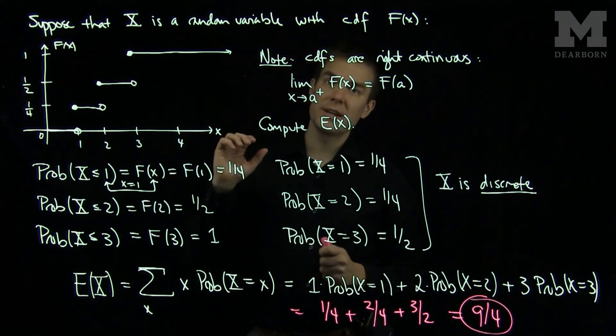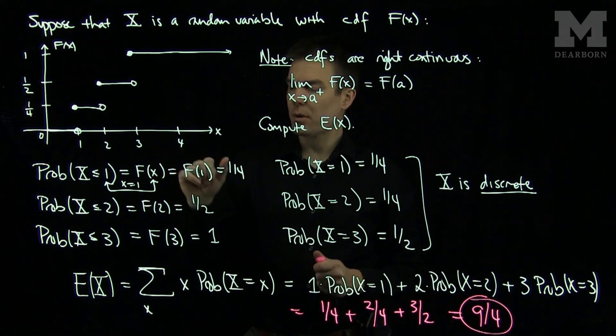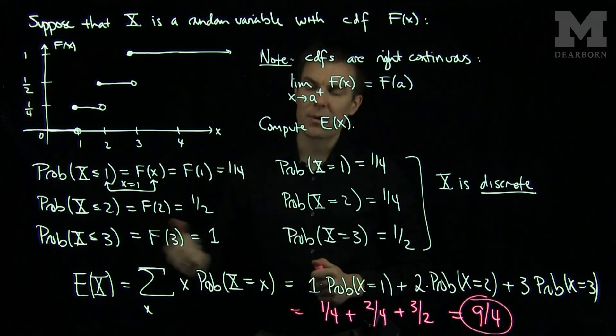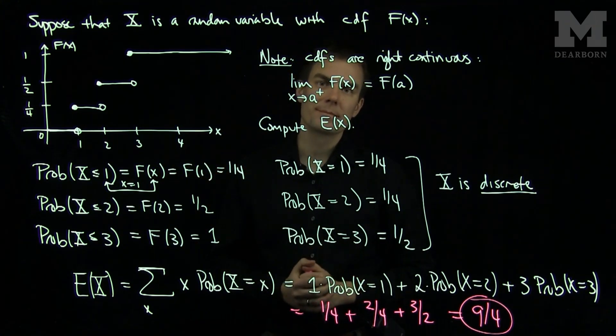So from the graph of the CDF we can see that the random variable X is a discrete random variable, and then we can compute the expected value as normal. Thank you very much.